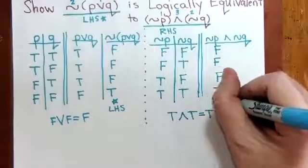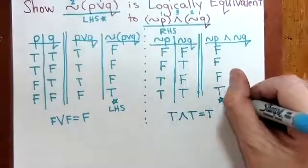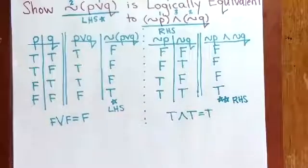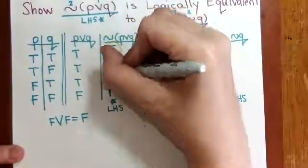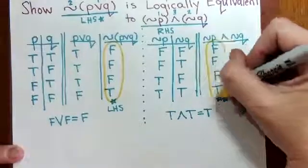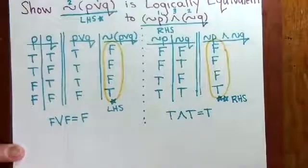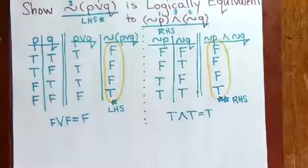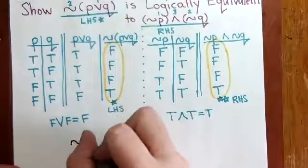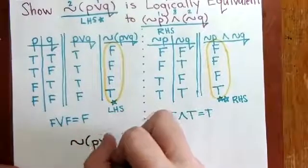Now we're done with the second side or the right-hand side. And now what we see is that the left-hand side result and the right-hand side result are the exact same truth table results. Because the truth table results match, we say that these are logically equivalent statements.